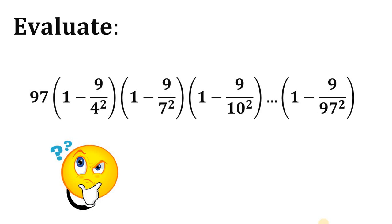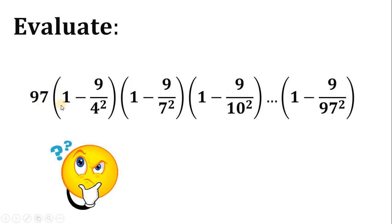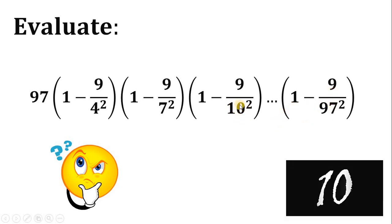Can you solve this math challenge? Here's the question. Evaluate 97 multiplied by 1 minus 9 over 4 squared, multiplied by 1 minus 9 over 7 squared, multiplied by 1 minus 9 over 10 squared, all the way up to 1 minus 9 over 97 squared. You can pause this video if you want to give this problem a try.